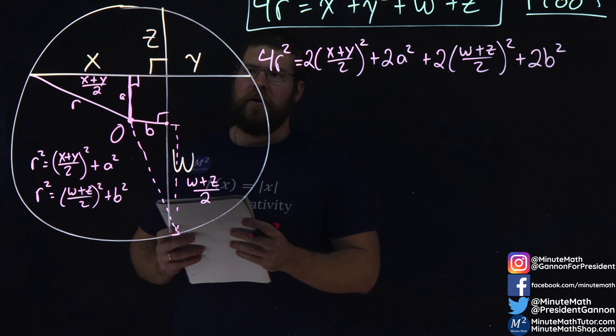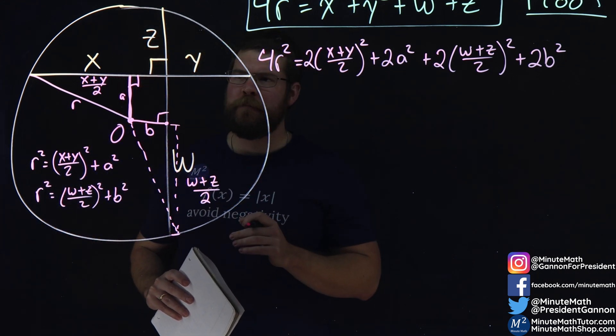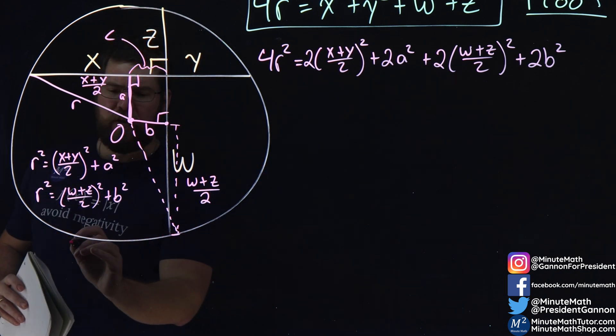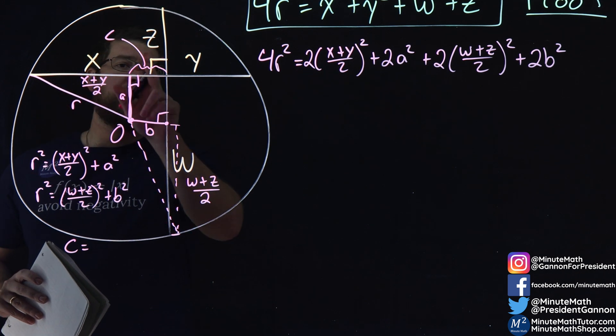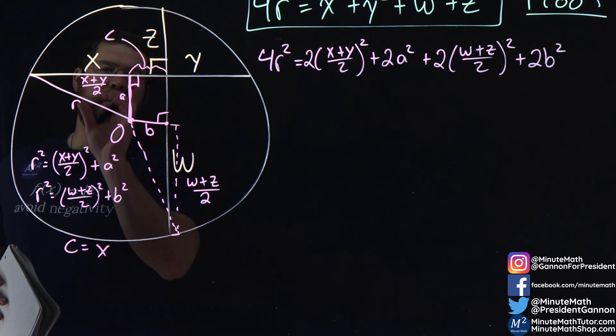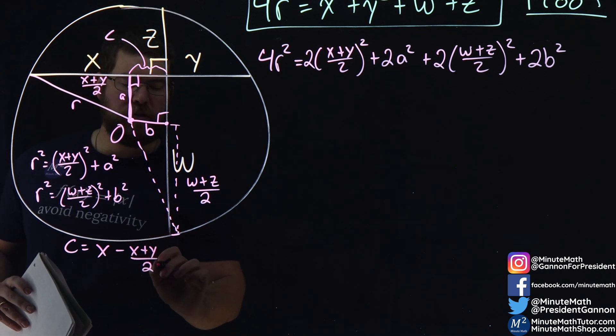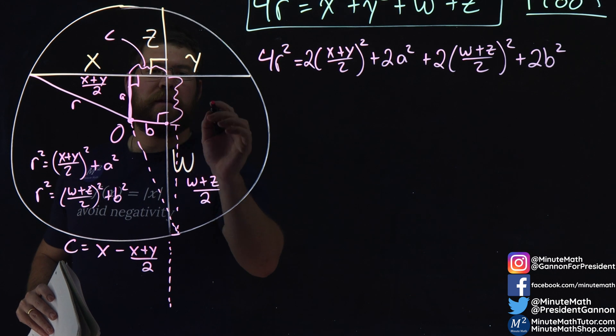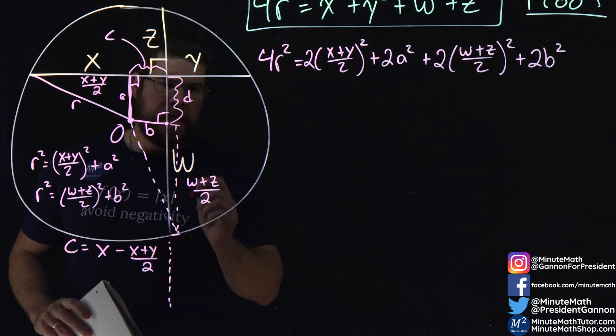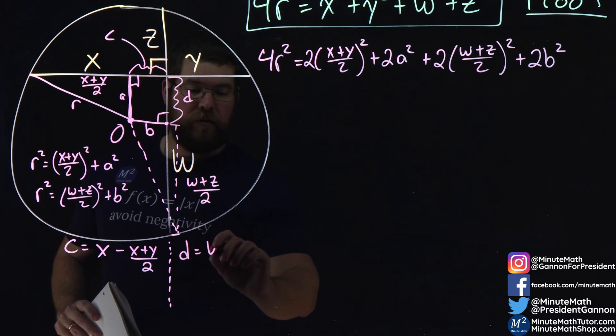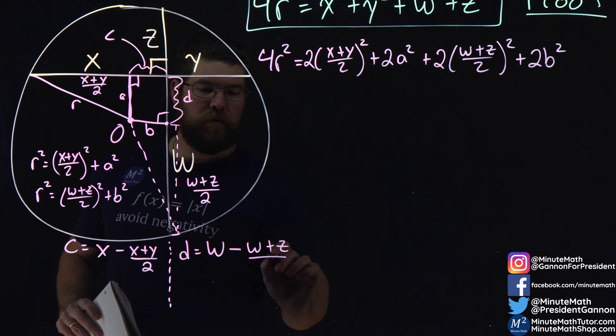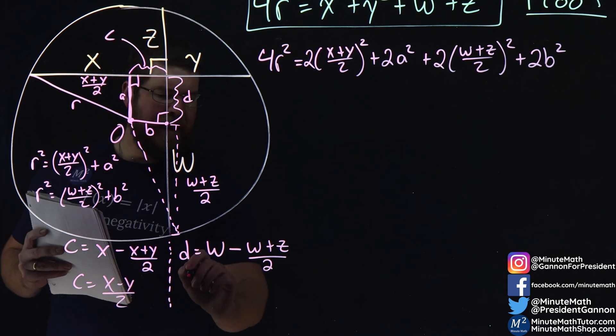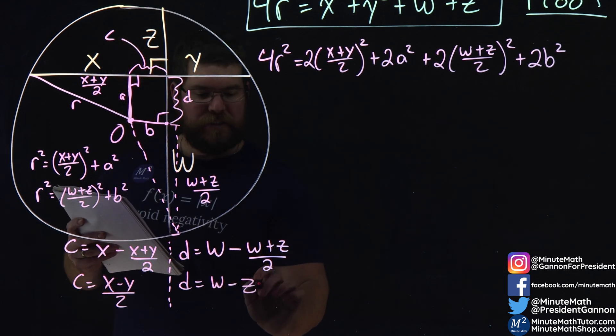Now we have to look into this little rectangle here. I want to find this length. Let's call that length c. That length c equals x minus (x + y)/2. I'm going to do the same thing here. Let's call that length d. Length d equals w minus (w + z)/2. Simplifying that out, c = (x - y)/2, and d = (w - z)/2.